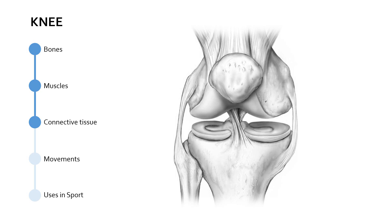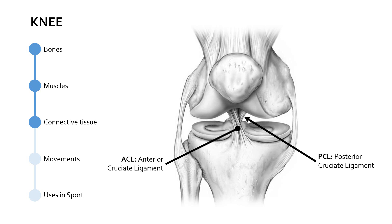Moving on to connective tissue, let's begin with the ligaments. The first two come as a pair: the ACL and the PCL — the anterior cruciate ligament and the posterior cruciate ligament. Anterior and posterior mean front and back. Cruciate means cross-shaped, from the Latin word crux. Both ligaments link the femur to the tibia, and their purpose is to prevent anterior or posterior dislocation of the tibia against the femur, stopping the lower leg bones from moving too far forwards or backwards and causing damage.